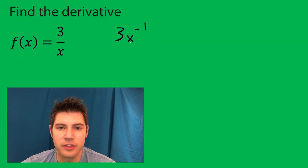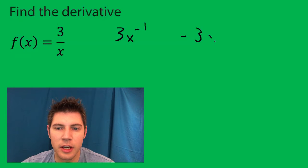And now when you take the derivative of this, the negative 1 is brought down, and you subtract 1 from it. And this ends up being the same thing as negative 3 over x squared.